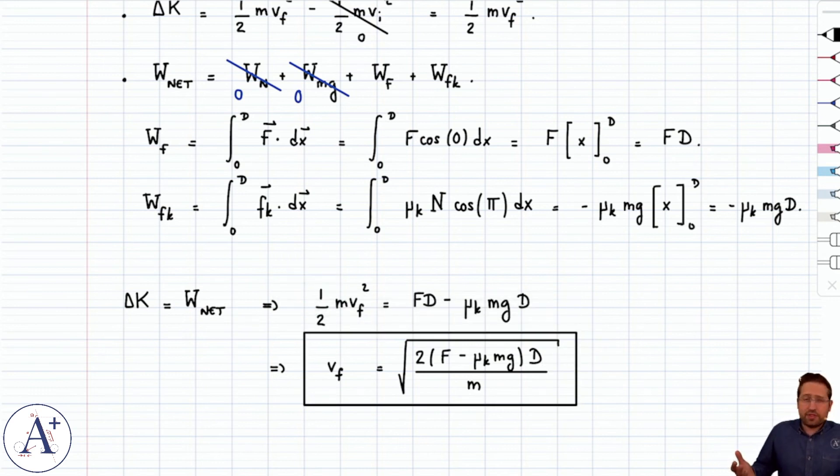Now, could have solved all of this with F net equals ma and kinematics. And you should try it and get the same answer. That's fine. Nothing wrong with that. And it's not obvious on this example that work kinetic energy is faster. But once you get a hang of it, it's a lot easier to deal with work, the work kinetic energy theorem.